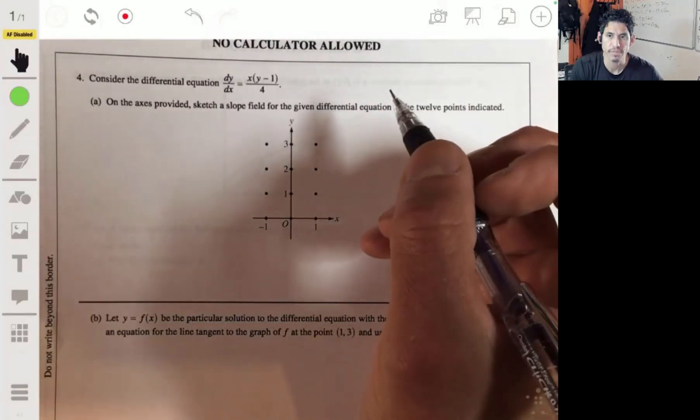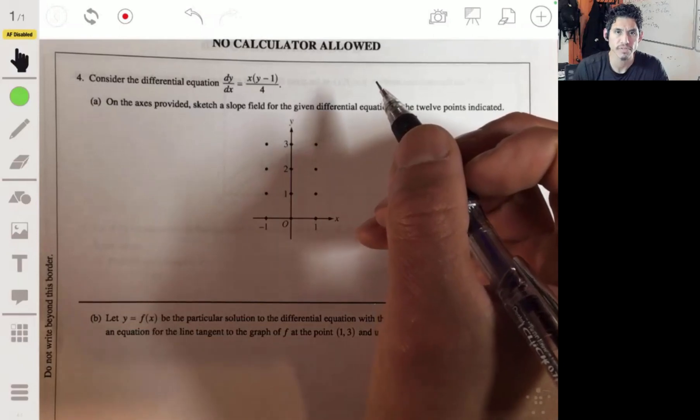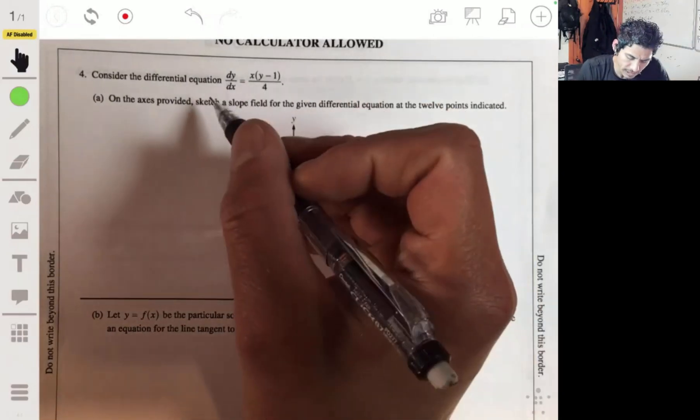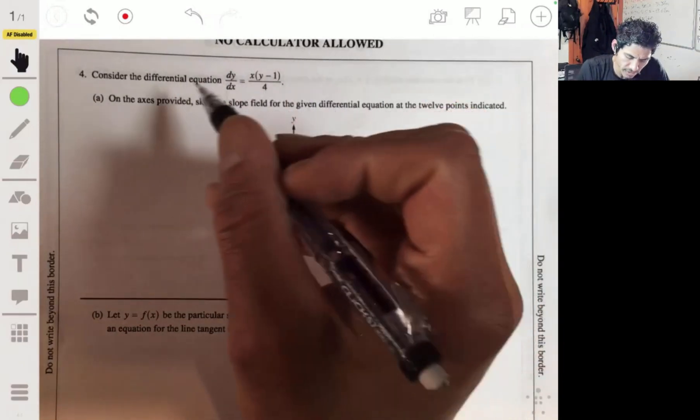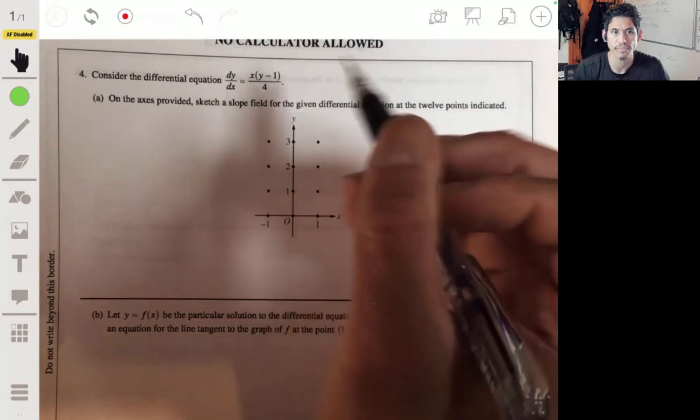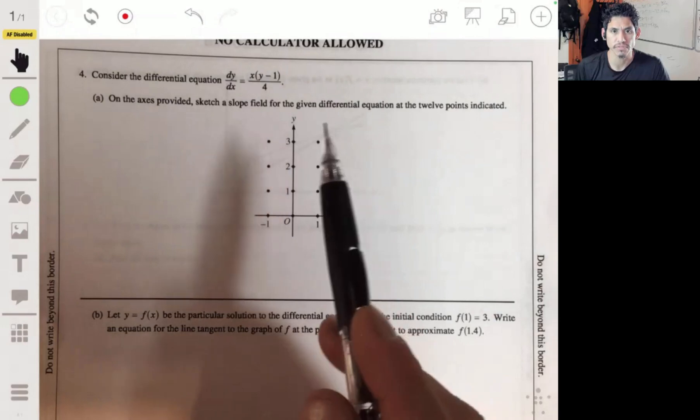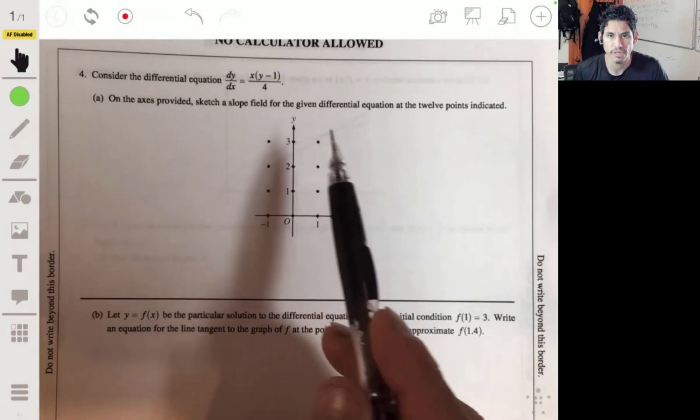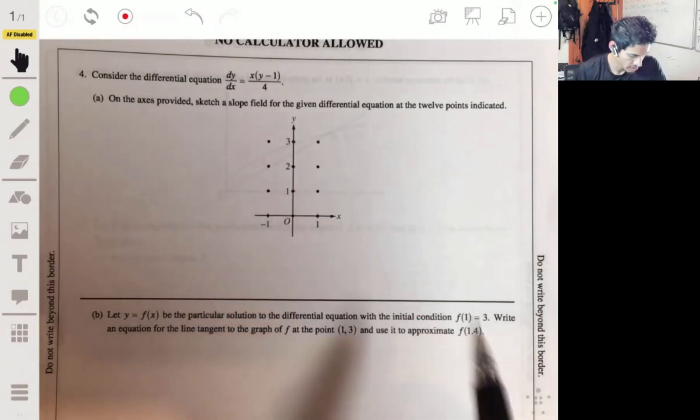Alright, so let's look at free response problem four from the 2015 practice exam. Here we have the differential equation dy/dx equals x times (y minus 1) over 4, and we're going to make a slope field for this differential equation for the 12 points shown here.